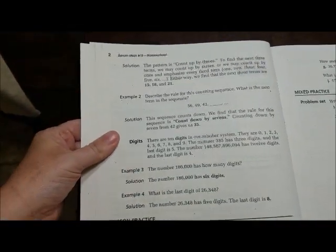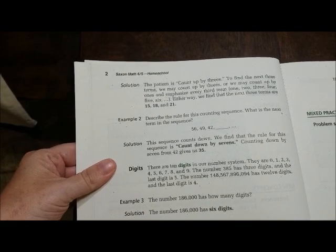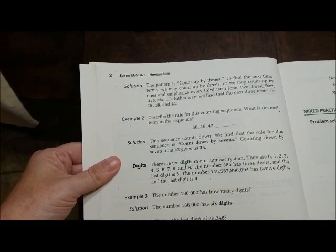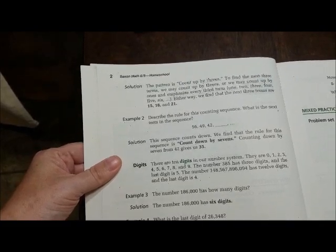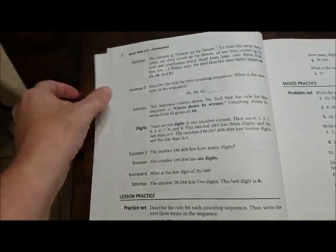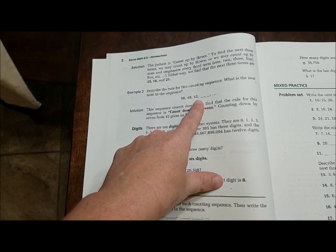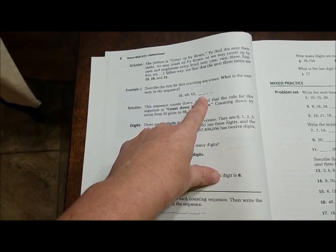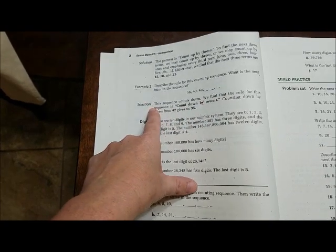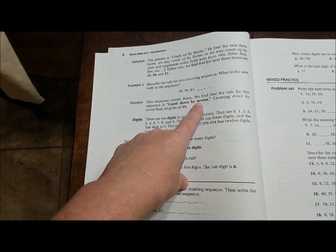Alright, so then we come over here and it tells us the pattern is counting by threes. We find that the next three terms we may count up by threes. And then it goes to example two. And then you have 56, 49, 42. So then you have to figure out what the next number is. And it tells us the solution here. So the next one is going to be 35 and we're counting by sevens.